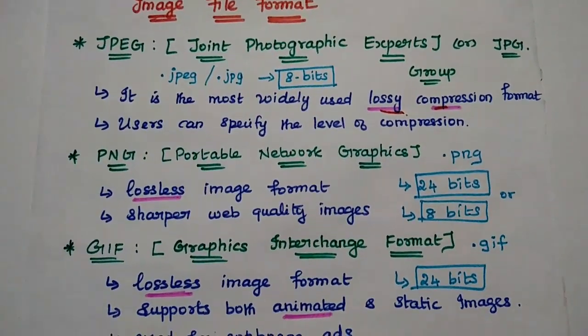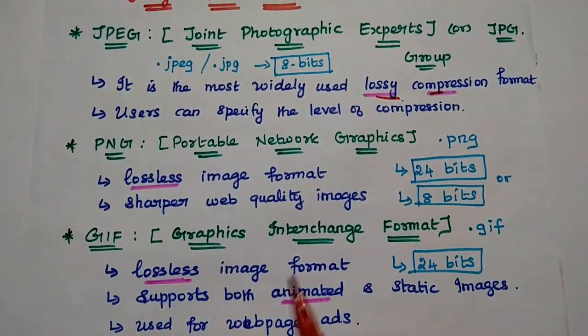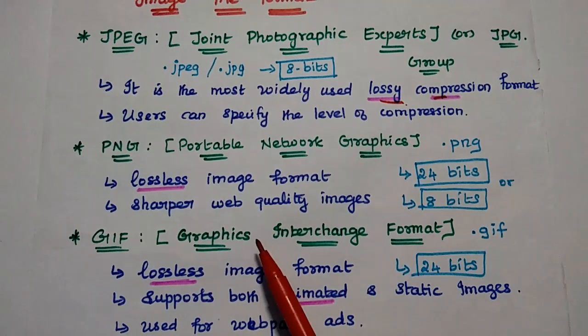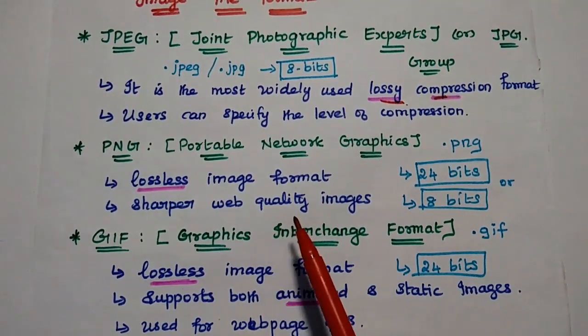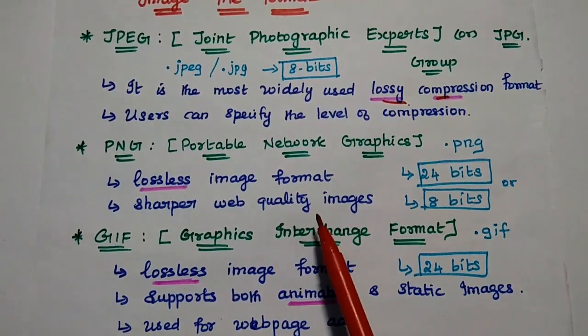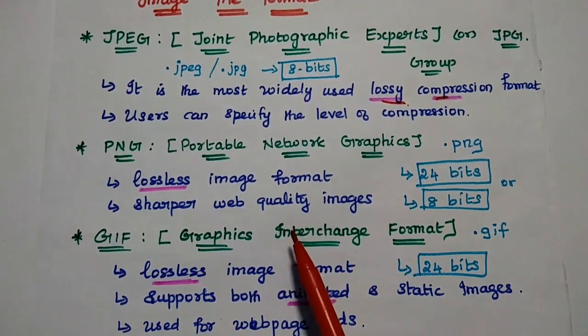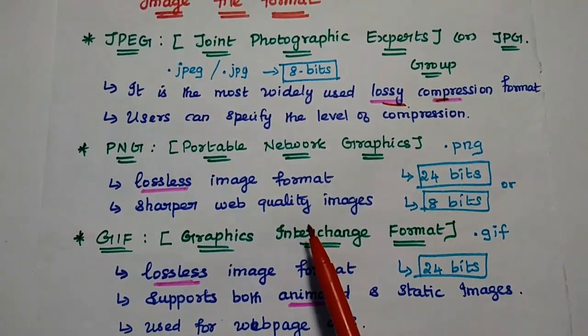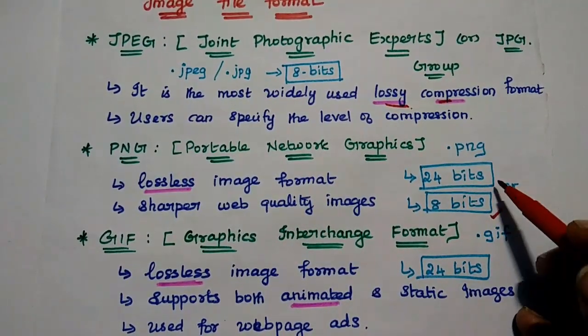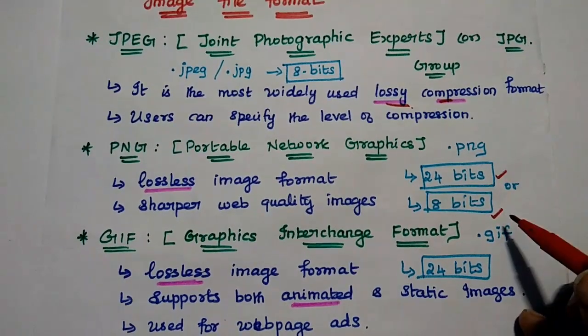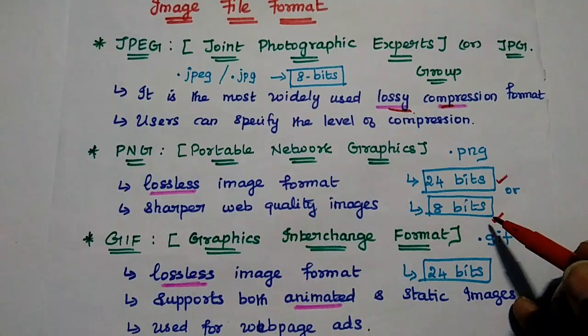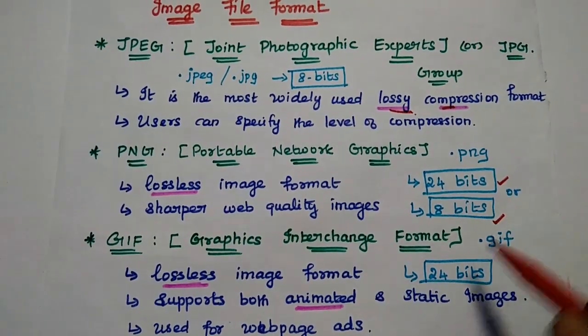Next one is PNG, that is Portable Network Graphics. Here we are using lossless compression format. In this one, we can get a sharper web quality image. Maximum websites, they are using this PNG files only, because it has lossless compression as well as sharper data quality. It can be used with 8-bits or 24-bits representation. Each pixel can be represented with this 8-bits values or 24-bits values.